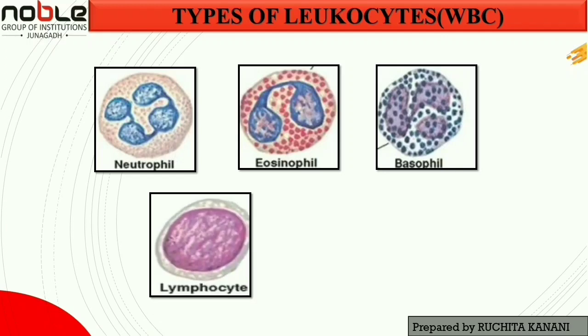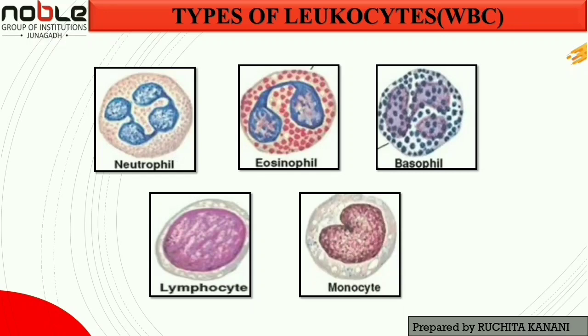The fourth type is lymphocytes, which are the second most common white blood cell in adults. They are typically small cells with a round dark nucleus and a thin strip of pale blue cytoplasm. The fifth type is monocyte. Monocytes are the third most common white blood cell after neutrophils and lymphocytes. They are large cells with a curved or folded nucleus and finely granulated cytoplasm that often contains vacuoles.